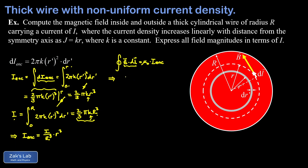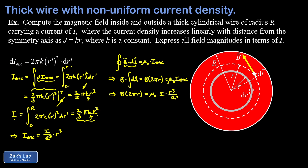Since the magnitude of B is constant along the entire loop, we can factor it out of the integral. The integral of dl is just the total circumference of the loop, so we end up with B times 2π times little r. This equals the right-hand side of Ampere's law, μ₀ times I enclosed, which we now write as I times little r cubed over big R cubed.